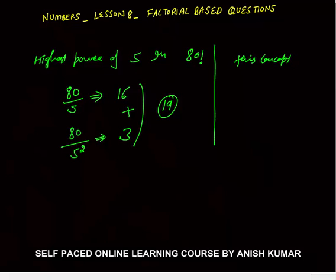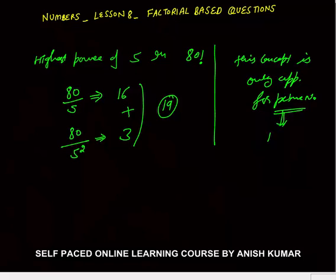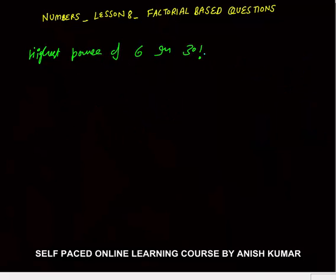This concept is only applicable when you need to find the highest power of a prime number. If you want to calculate the highest power of a prime number, only then this method applies. Next question: highest power of 6 in 30 factorial. Since 6 is not prime — it equals 2 into 3 — we need one 2 and one 3 to form each 6.